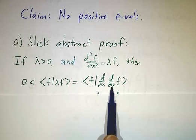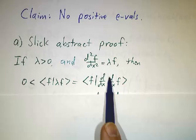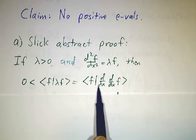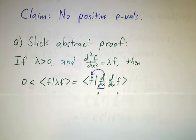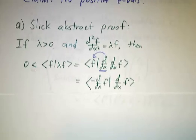But λf is the second derivative of f. And now we use the fact that the adjoint of the first derivative is minus the first derivative. We take this first derivative and push it over to the other side where it becomes a minus first derivative.